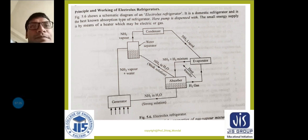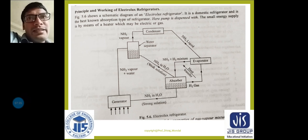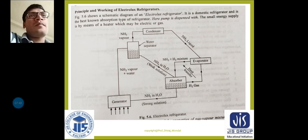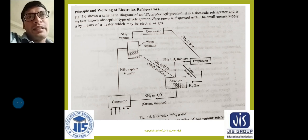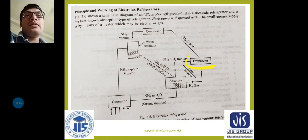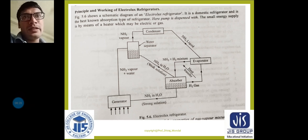Hydrogen is the lightest gas and is used to increase the rate of evaporation of liquid ammonia passing through the evaporator. The lighter the gas, the faster the evaporation. In the evaporator, ammonia and hydrogen are mixed together — hydrogen increases the rate of evaporation of the liquid ammonia.